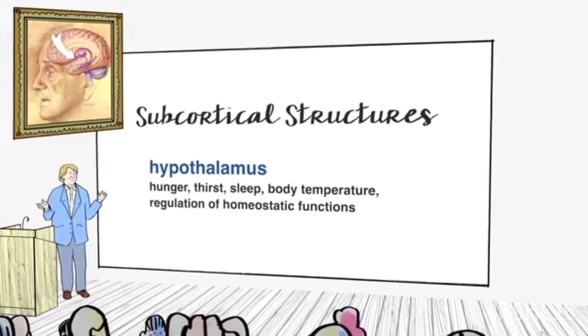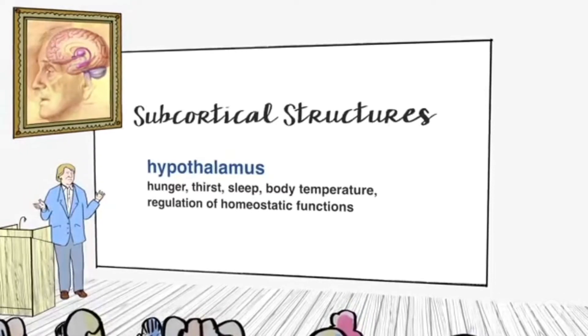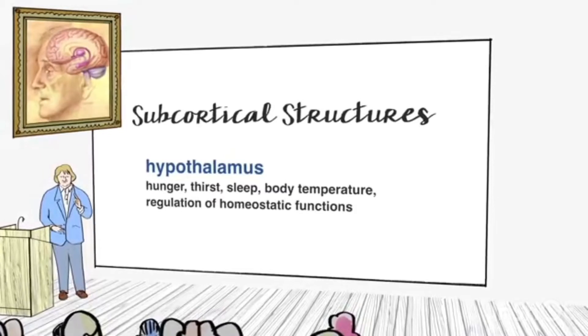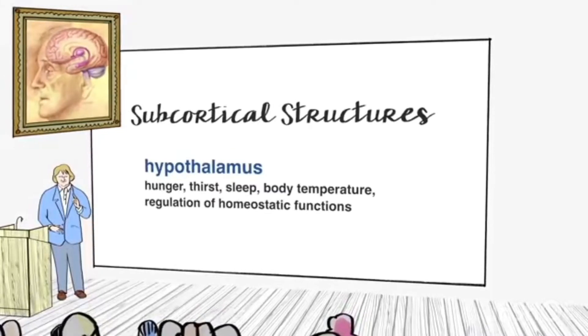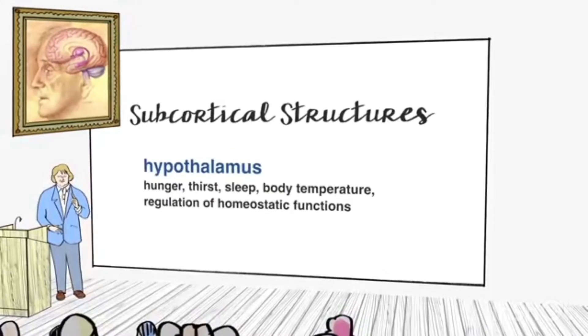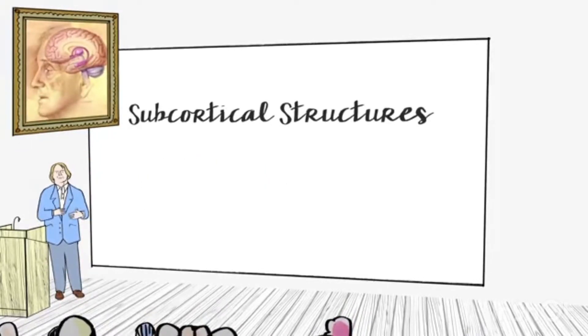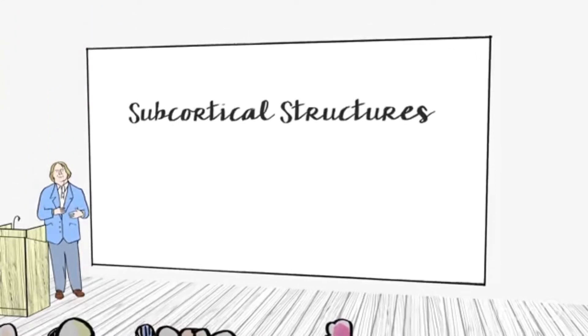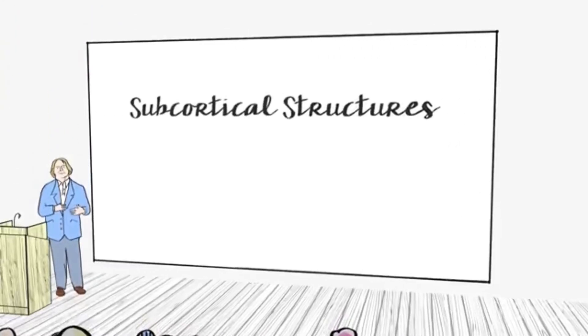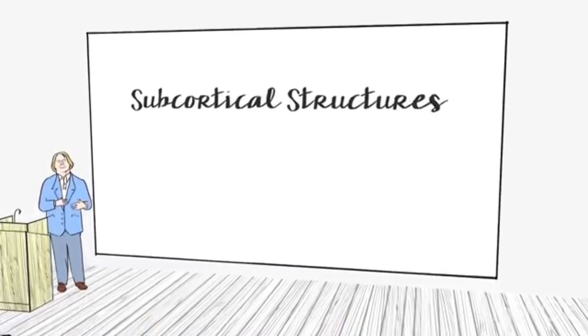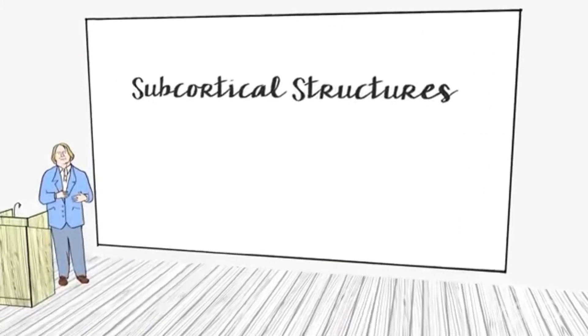The cerebral cortex is all crumpled up. If you were to take a brain, pull out the cortex and stretch it out, like a napkin you got from cleaning your car, and you stretched it out, it's about two feet square.